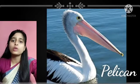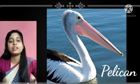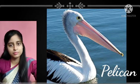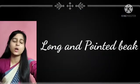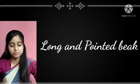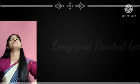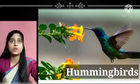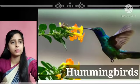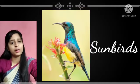Pelicans eat fish, crabs, and frogs, so they have a very long and sharp beak. Some birds have a long and pointed beak — hummingbirds and sunbirds have a long and pointed beak to suck nectar from flowers. As you can see on your screen, hummingbirds and sunbirds use their long and pointed beak to suck nectar.